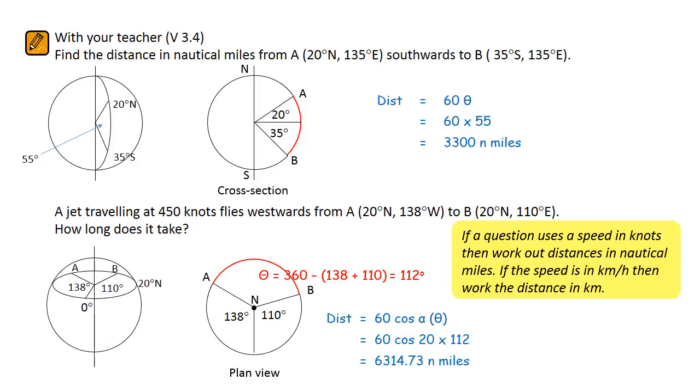But the question asked us for the travel time, so we need to turn to our old distance-speed-time formula. These formulas work just the same when using nautical miles and knots. Time equals distance divided by speed. That's a distance of 6,314.73 nautical miles divided by a speed of 450 knots. Convert your final decimal answer into hours and minutes.